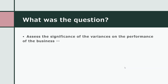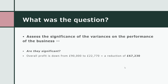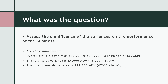After calculating all variances, we need to assess their significance. Overall, profit is down by £67,230. The net sales variance is £4,000 adverse (price and volume offsetting each other). The net materials variance is £17,200 adverse (price and usage offsetting). The net labour variance is £19,780 adverse (rate and efficiency offsetting). All of these are pretty significant.